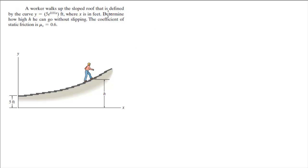A worker walks up the slope roof that is defined by the curve. It's giving you the function of this curve, where x is in feet of course. Determine how high h can it go without slipping knowing that the coefficient of friction is 0.6.